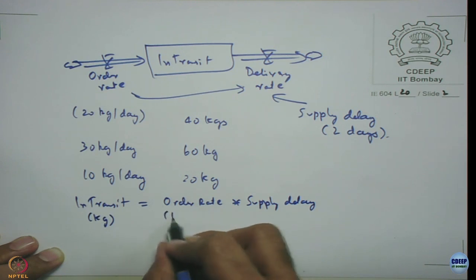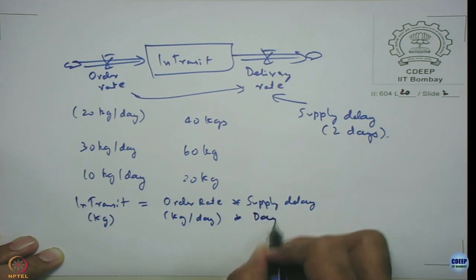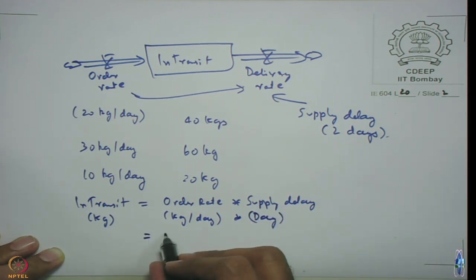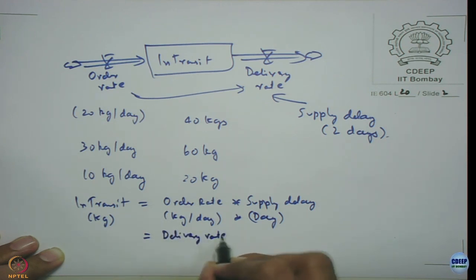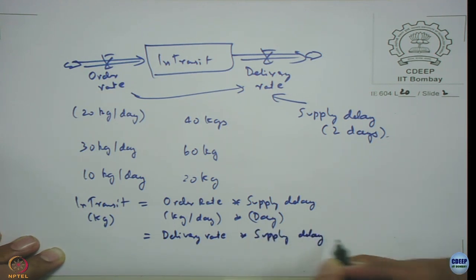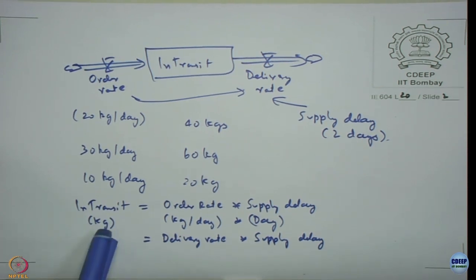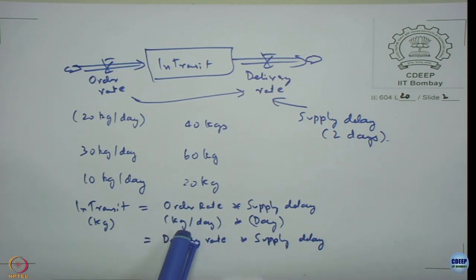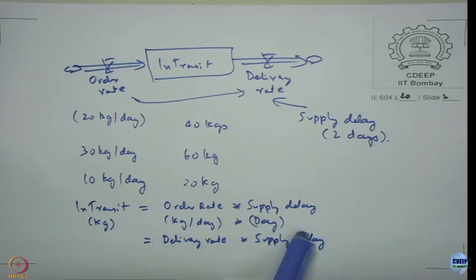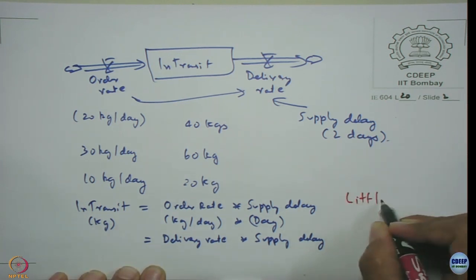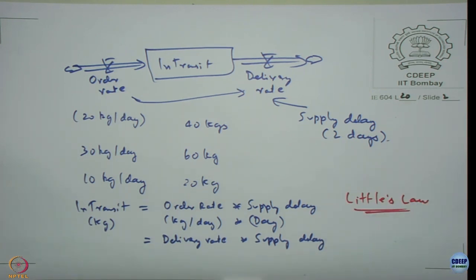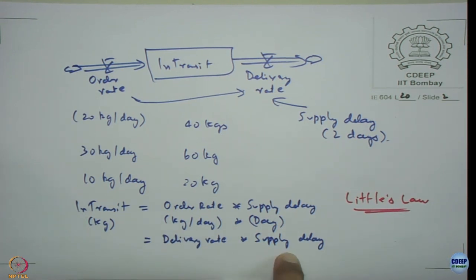In transit is equal to the order rate multiplied by supply delay. In units, that is kg per day multiplied by days — same as delivery rate multiplied by supply delay. This expression neatly relates quantity in transit, or work in progress, along with your throughput rate and flow time. This relation is known as Little's Law, named after John Little: work in process equals throughput rate multiplied by flow time, which is the supply delay.